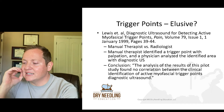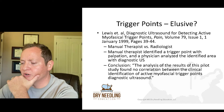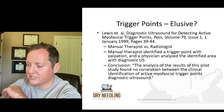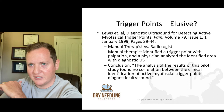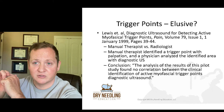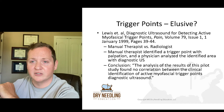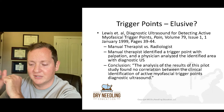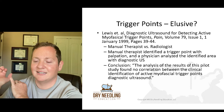Another article by Lewis et al. in 1999 compared a manual therapist versus a radiologist. A manual therapist palpated a patient and identified a trigger point, then a physician walked in with diagnostic ultrasound and analyzed the palpated area. Their conclusion: the analysis found no correlation between the clinical identification of active myofascial trigger points and diagnostic ultrasound. Every time the manual therapist palpated and marked a trigger point, the radiologist said no, that's not a trigger point. So no correlation between manual identification and diagnostic ultrasound.